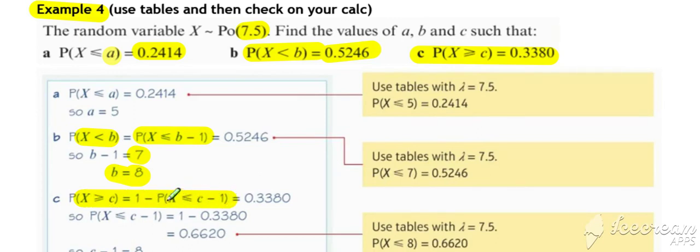We can rearrange our less than or equal to statement to correspond to this probability. A rearrangement to make the probability the subject gives us the probability that x is less than or equal to c minus one must be equal to 0.6620.